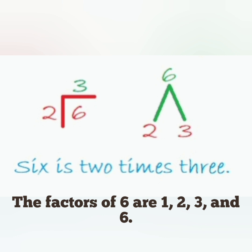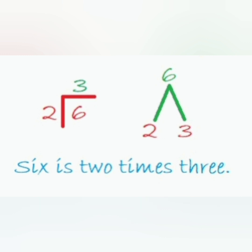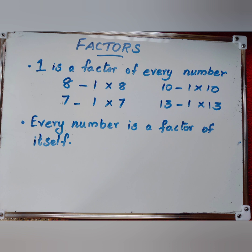Here, 2 times 3 is 6. So, the factors of 6 are 1, 2, 3 and 6. Why do we include 1 in the factor?